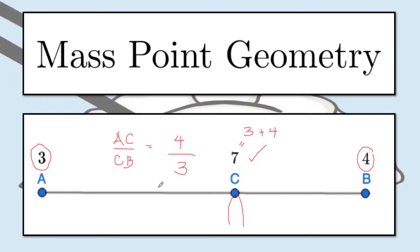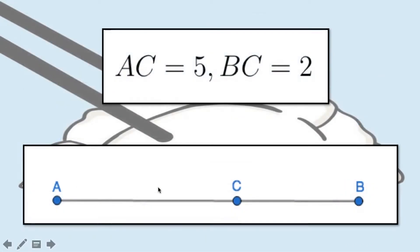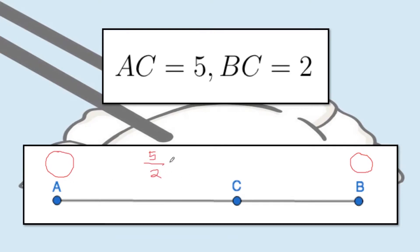Now let us dive into some examples. Suppose AC equals 5 and BC equals 2, and I want to make this figure balanced. First step: I must assign weights to points A and B. Since AC is longer than CB, I should assign a heavier weight on point B and a lighter weight on point A. So I must have the ratio 5 to 2, which is AC over CB. This equals the mass on B over the mass on A. I can easily assign the weights 5 and 2. But note that these are not the only answers.